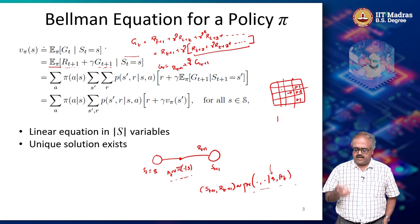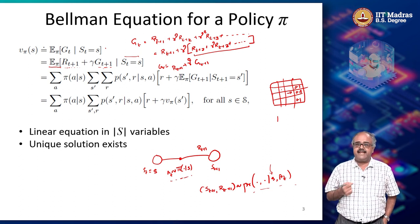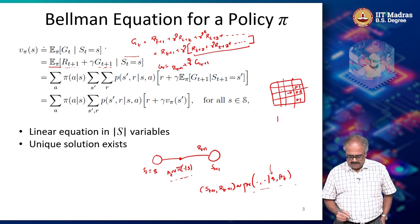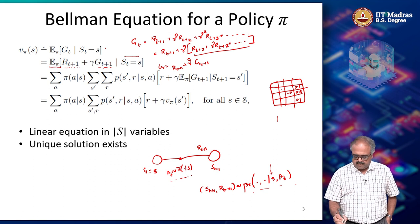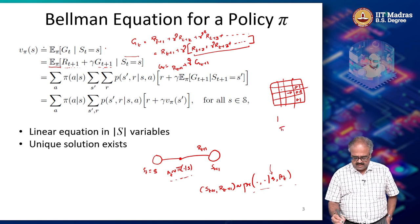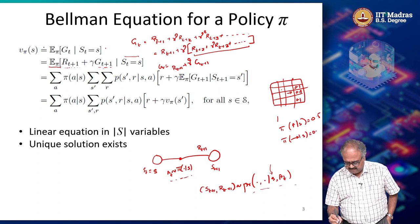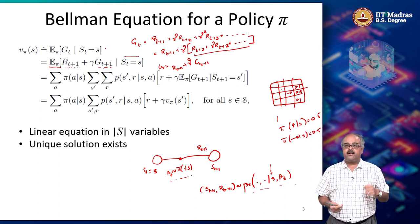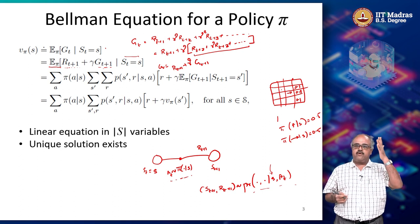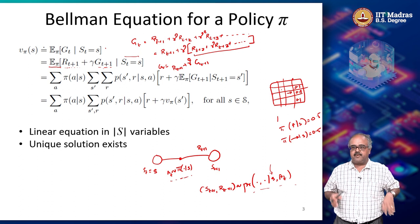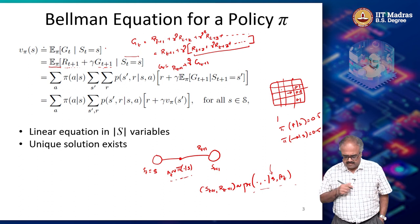So that is the MDP we have — four states, four actions, and each action has some probability of landing in various states. Let us say my policy pi is: pi(up | any state) = 0.5 and pi(right | any state) = 0.5. What does this mean? At any given state I toss a coin — if it comes heads I go up, if it comes tails I go right. These are simple examples to illustrate the concept.